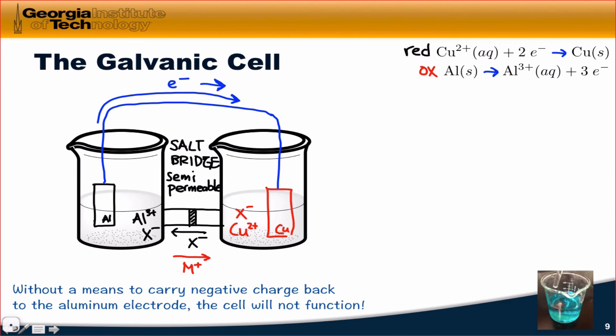Now that we've closed the loop, current will flow spontaneously through the wire in the direction indicated, and we can hook up an electrical load to this — something like a television, for example — and use the galvanic cell to power that device.